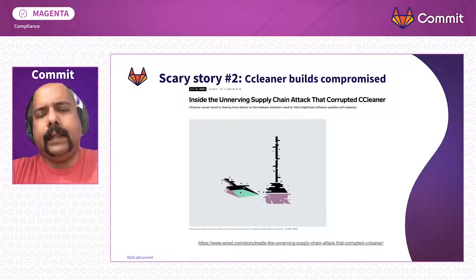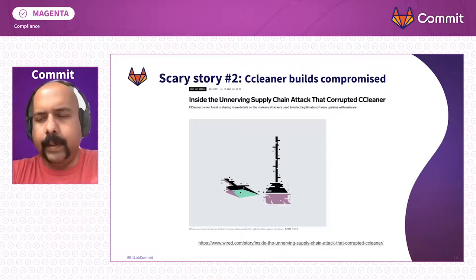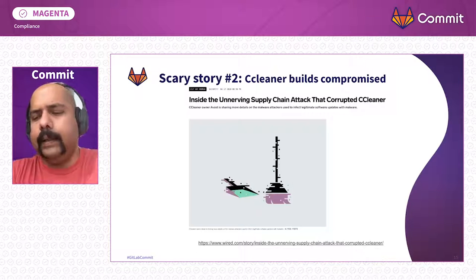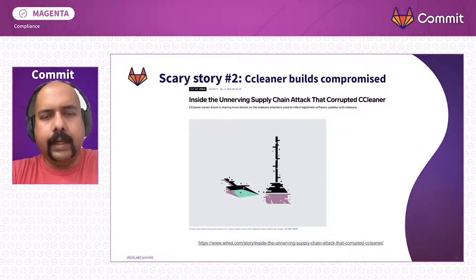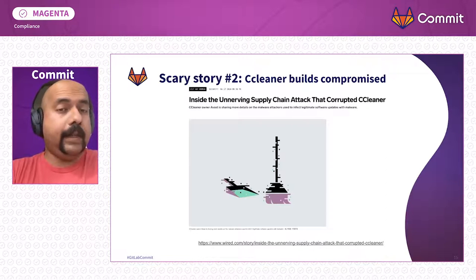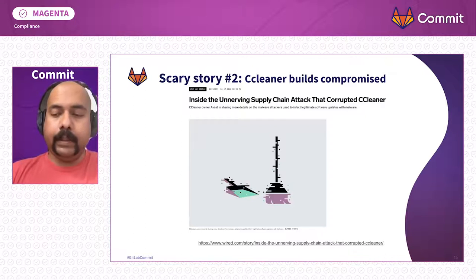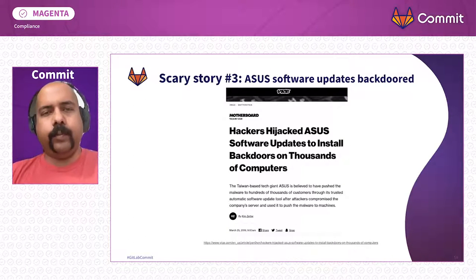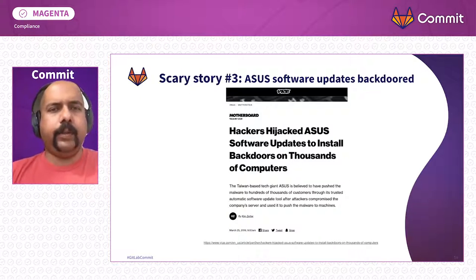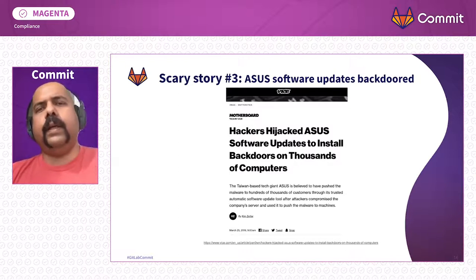Scary story number two: CCleaner, a popular Windows cleanup tool. While they were being acquired by Avast, unbeknownst to both of them, someone had compromised their build infrastructure and used it to build malicious code sneaked into CCleaner. There were millions of downloads, but they were interested in about 11 particular companies. One of those leads to scary story number three: Asus, who later got their own software updates backdoored. The suspicion is they got to Asus by poisoning the CCleaner well. We're playing with very serious professionals — nation-state attackers — who are interested in breaking into the CI/CD pipeline.